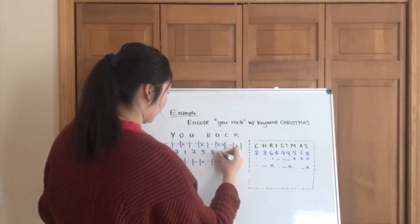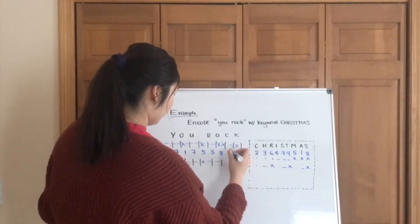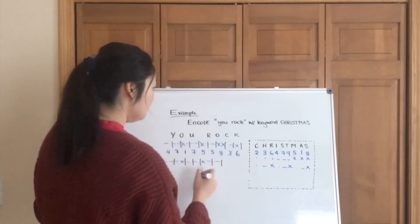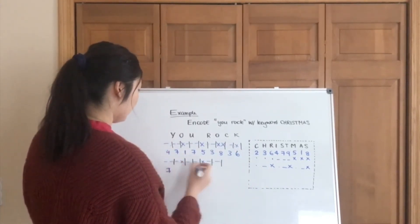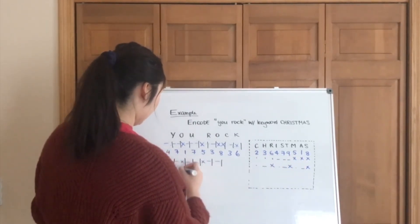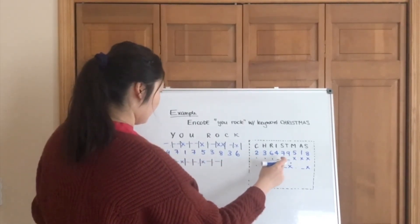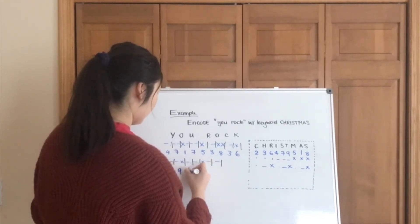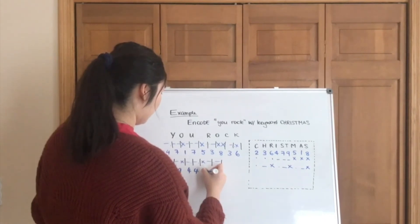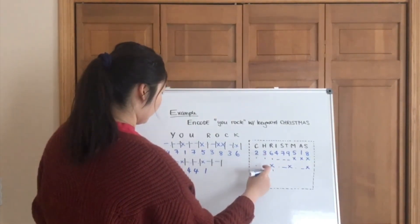Double X is an 8. Dot dash is another 3. Dot X is a 6. X, 7, dash X is a 9. Dash dot, 4. Another 4. X dash is 1. And then dot dash is 3.